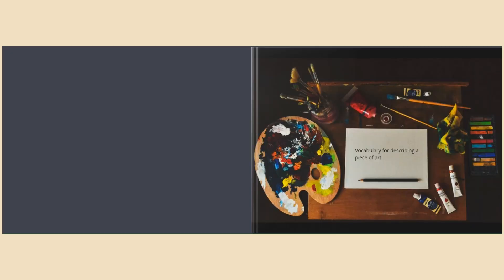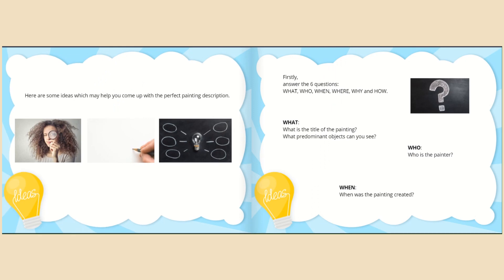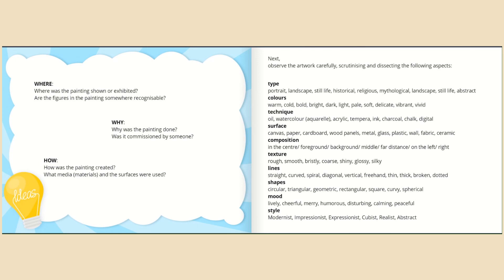Let's take a look at some useful vocabulary that may help you describe a piece of art. Answer the six questions: What is the title of the painting? Who painted it? When was it created? Where was it shown or exhibited? Why was the painting done? And how was it created? Next, observe the artwork carefully, scrutinizing and dissecting the following aspects.